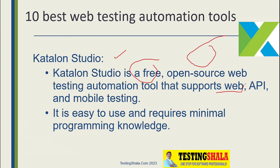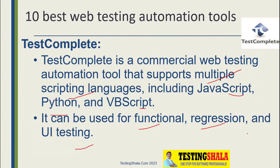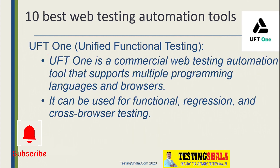The third type of automation tool is Katalon Studio. Katalon Studio is a free and open source web automation tool. This tool supports automating web elements, we can automate APIs, and we can also automate mobile testing as well. You can do automation with this tool even if you have little or lesser knowledge in programming.